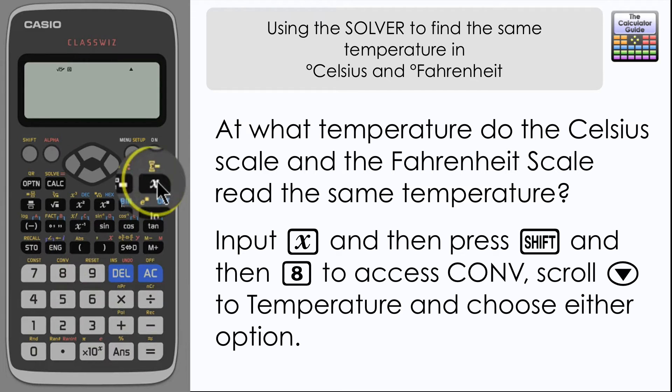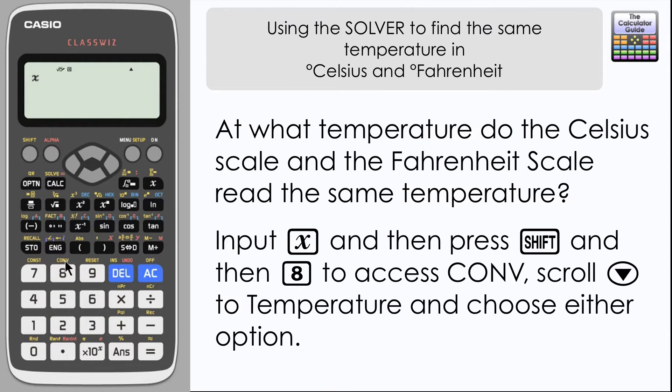As we're dealing with an unknown, we have to input X. Use the letter X to input that onto the screen. Next, we're going to access the conversion menu, so press shift and then 8, and then scroll down to access the temperature menu.